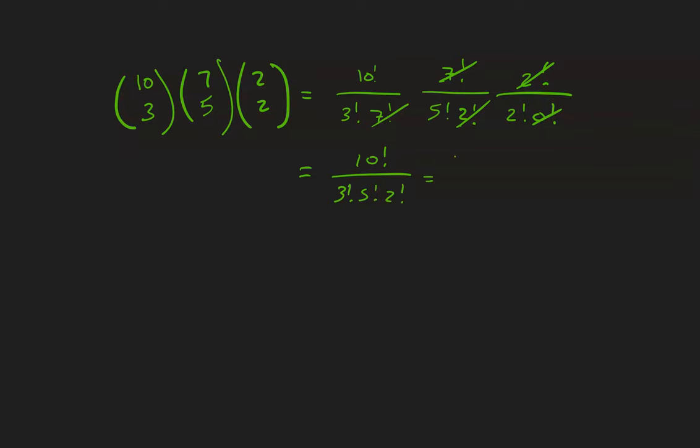This equals (10×9×8×7×6)/(3!×2!) because the 5 factorials cancel. Since 3! = 6 and 2! = 2, we get 5×9×8×7 = 2,520.